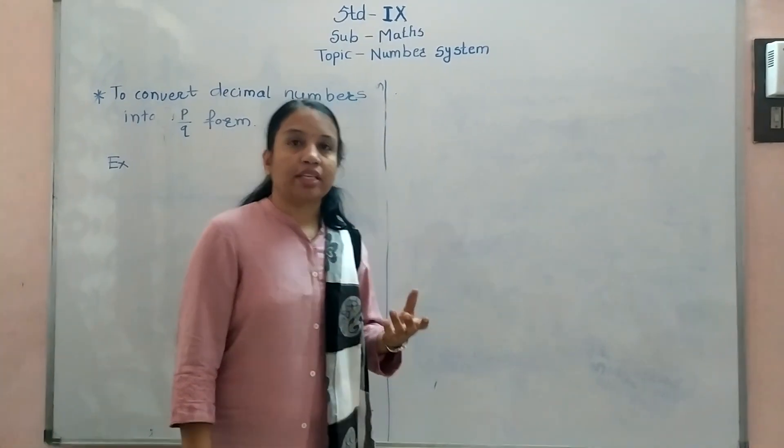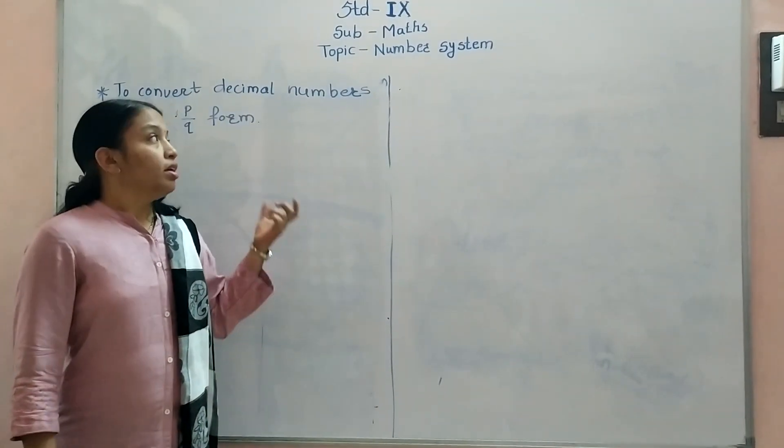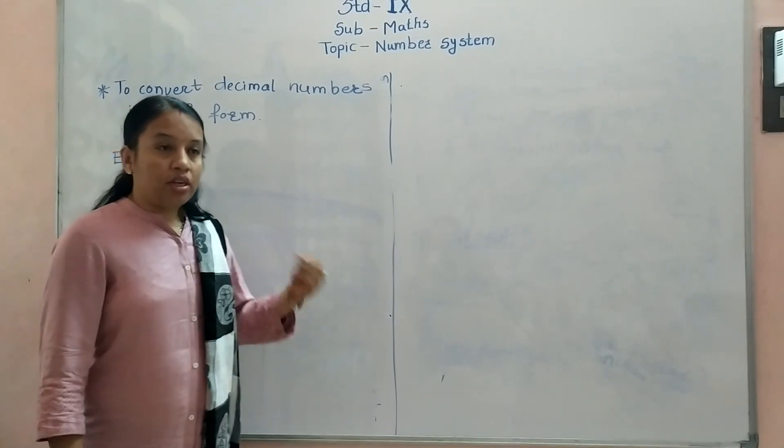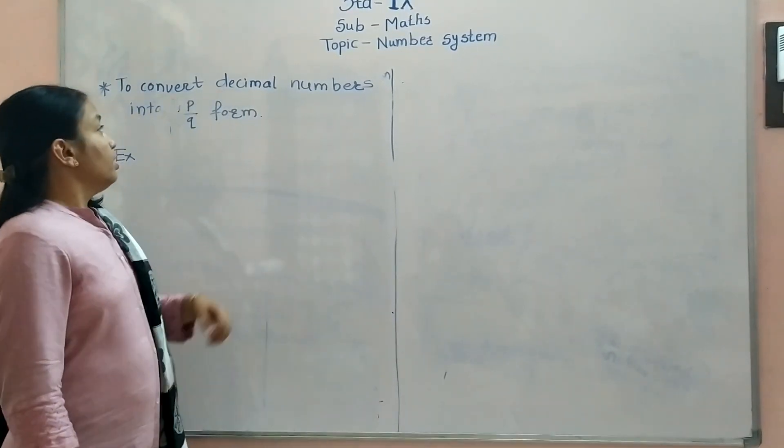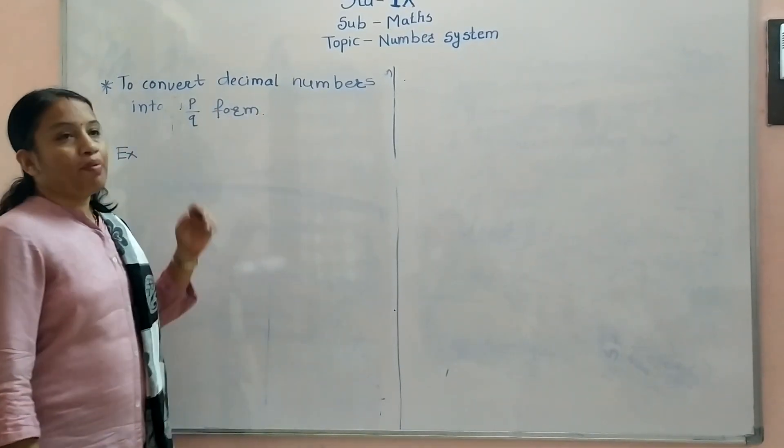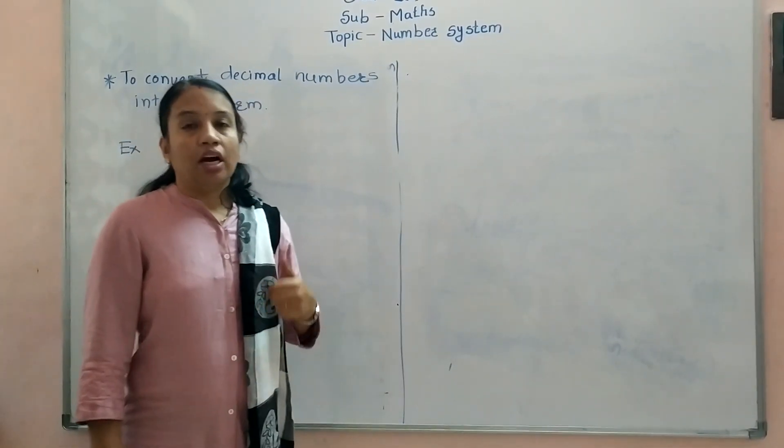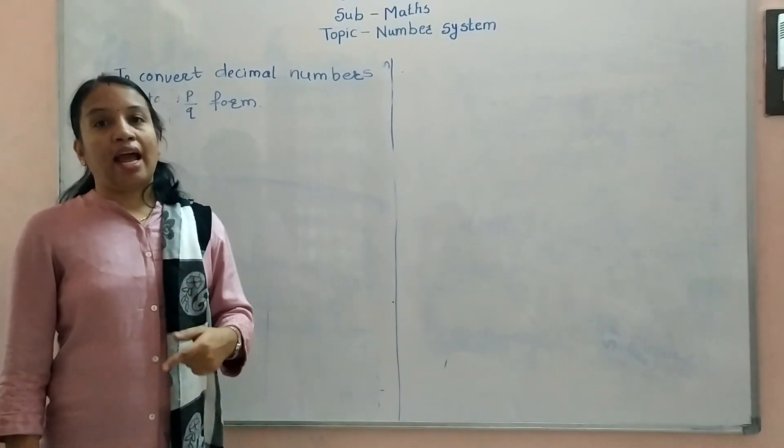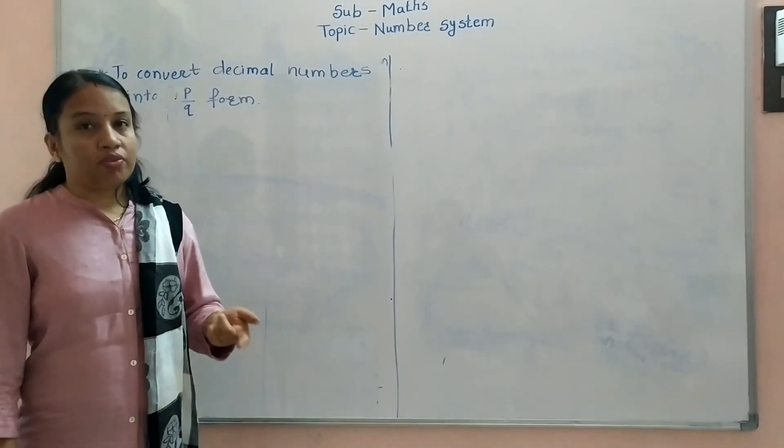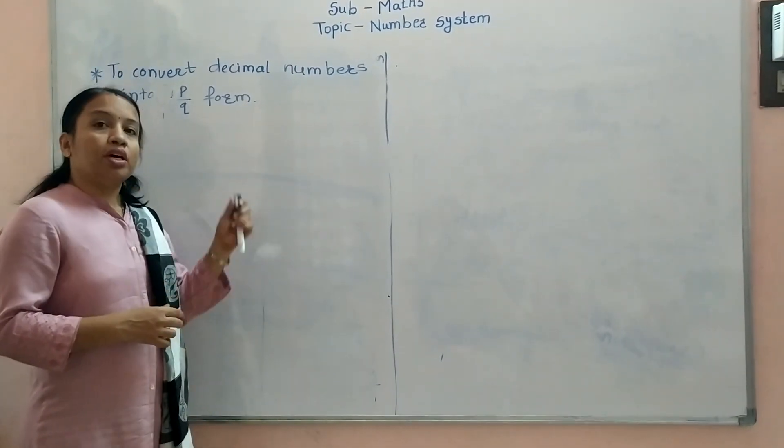What is the relation between the decimal expansions and the rational number? Now, how to convert that decimal numbers into the P by Q form? Two decimal expansions: one is terminating, another is non-terminating and recurring. How to convert that into the P by Q form?